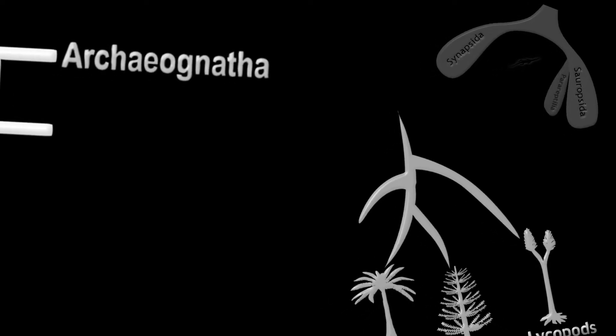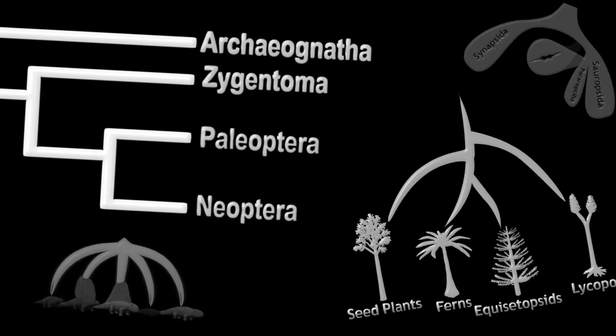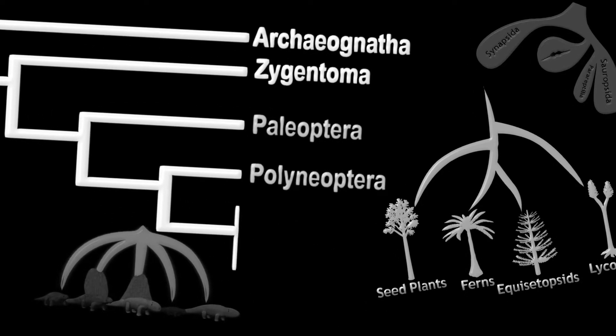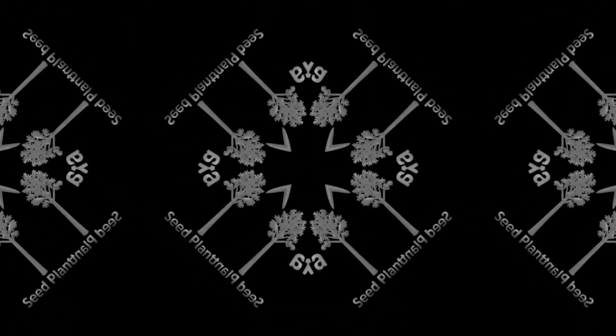When learning about the history of life, you'll probably come across a lot of phylogenetic trees showing the relationships of different groups of living things. This video will explain what exactly these trees mean and how to understand them.